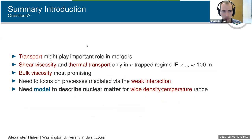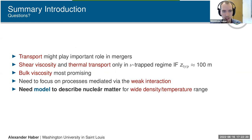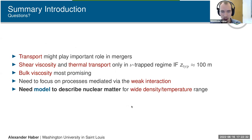To summarize the introduction: transport might play an important role in mergers. Shear viscosity and thermal transport are only important if neutrinos are trapped and if typical length scales are roughly 100 meters. Bulk viscosity probably has the biggest influence, and we really need to focus on processes mediated via the weak interaction. We also need a model to describe nuclear matter for a wide density and temperature range.